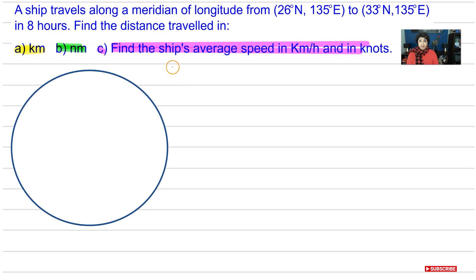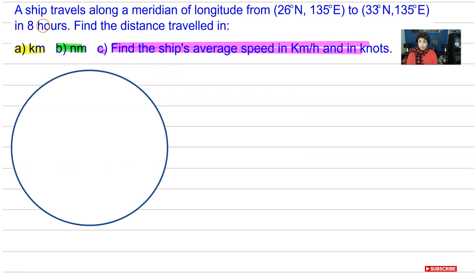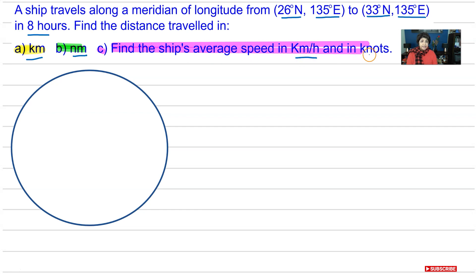So let's start the session. We're told a ship travels along a meridian of longitude from 26 degrees north, 135 degrees east to 33 degrees north, 135 degrees east in 8 hours. Find the distance travelled in first kilometres, then nautical miles, and then we need to find the average speed in kilometres per hour and then in knots.